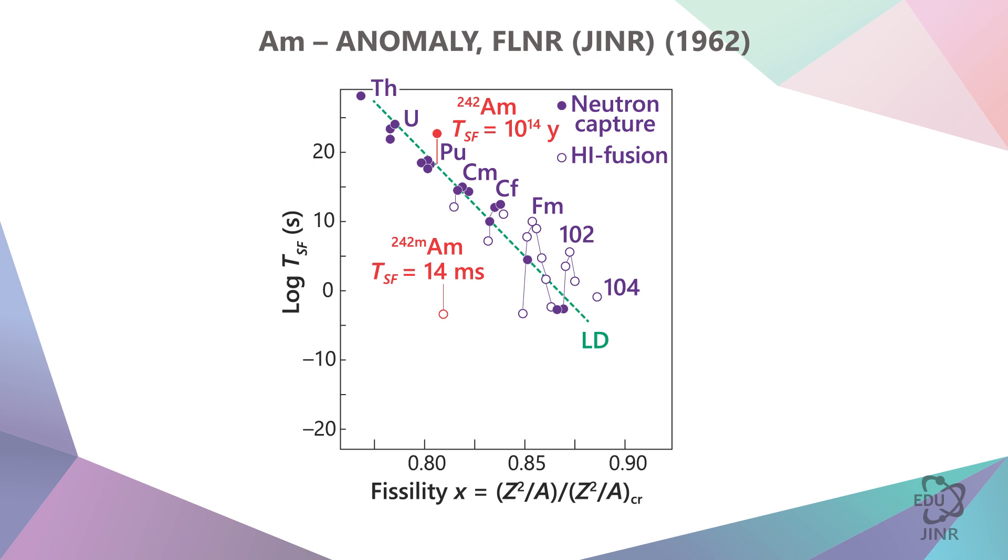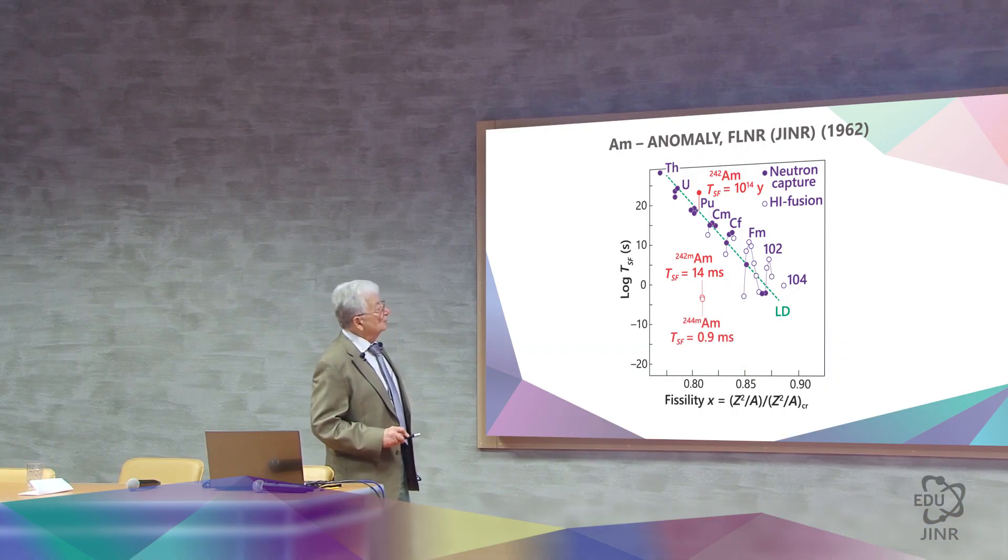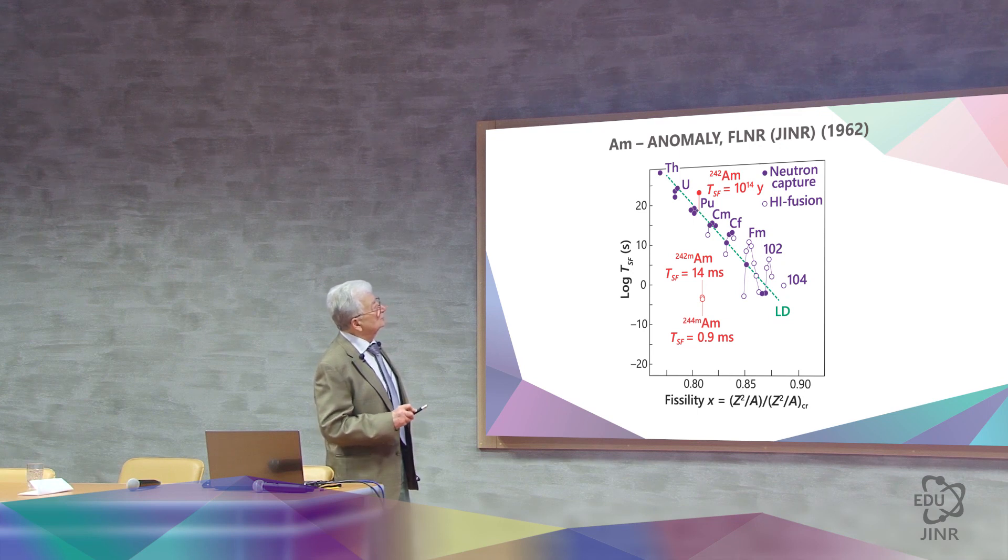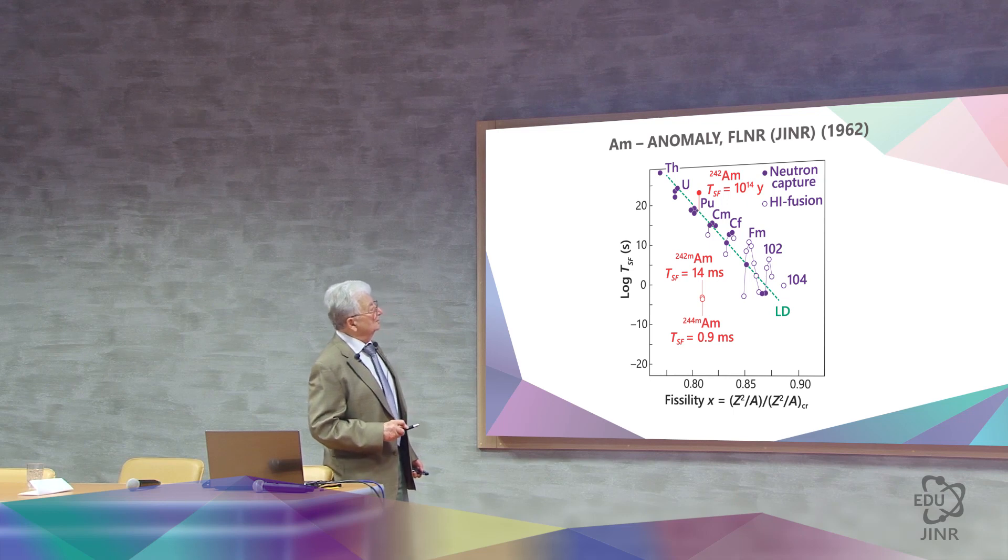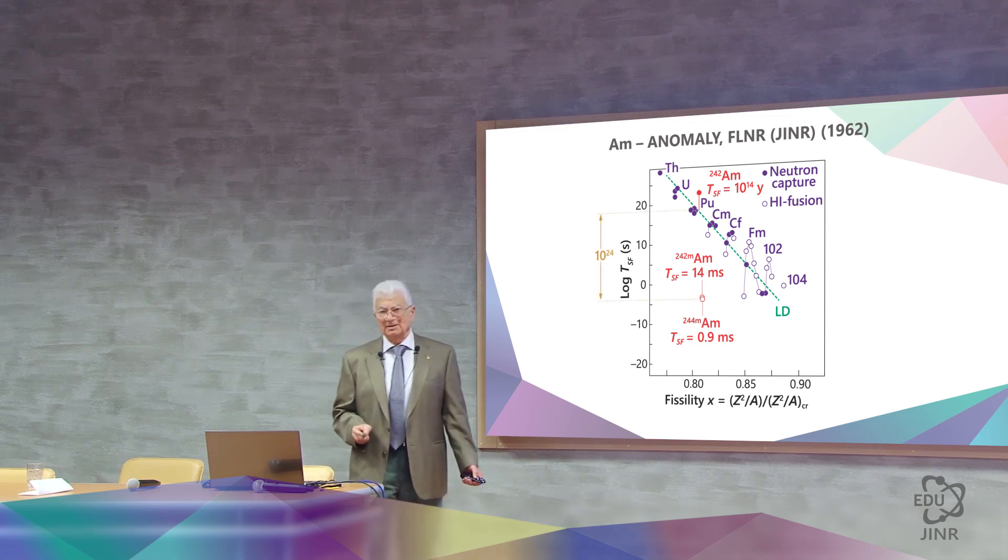But here at FLNR, it was 14 milliseconds. Naturally, it means that we measured incorrectly and tried to find our mistake. While looking for our mistake, we came across another isotope which lives for 0.9 milliseconds. This was unfortunate because the difference between what was already known about the same nucleus for the same type of decay differed from what had been found in this experiment by 24 orders of magnitude.